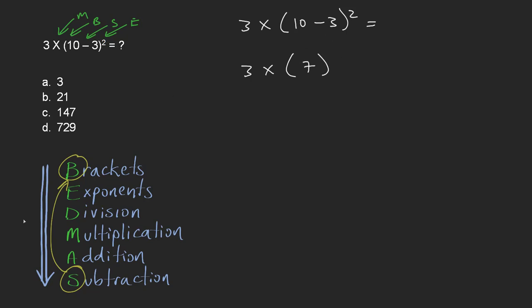And so in this first step we've dealt with our brackets. And the next thing that we're going to do is the exponent, because that comes next on the list. So I have to do 7 squared. And so this is going to be 3 times 49.